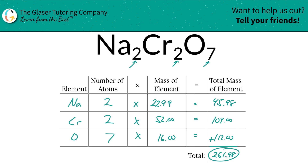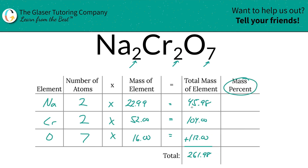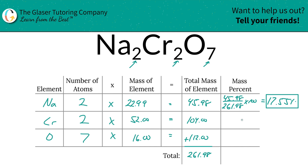That's the total mass of the compound — that was the first step. Now we're going to add a column to the table and find those percentages. To find the mass percent of sodium, we take the total mass of sodium — 45.98 units of mass — and divide it by the total mass of the entire compound, 261.98, then multiply by 100. This is a simple percent calculation: part over whole times 100. The units will cancel, so it doesn't matter what units you use. That gives us 17.55%, which is the percent composition of sodium.